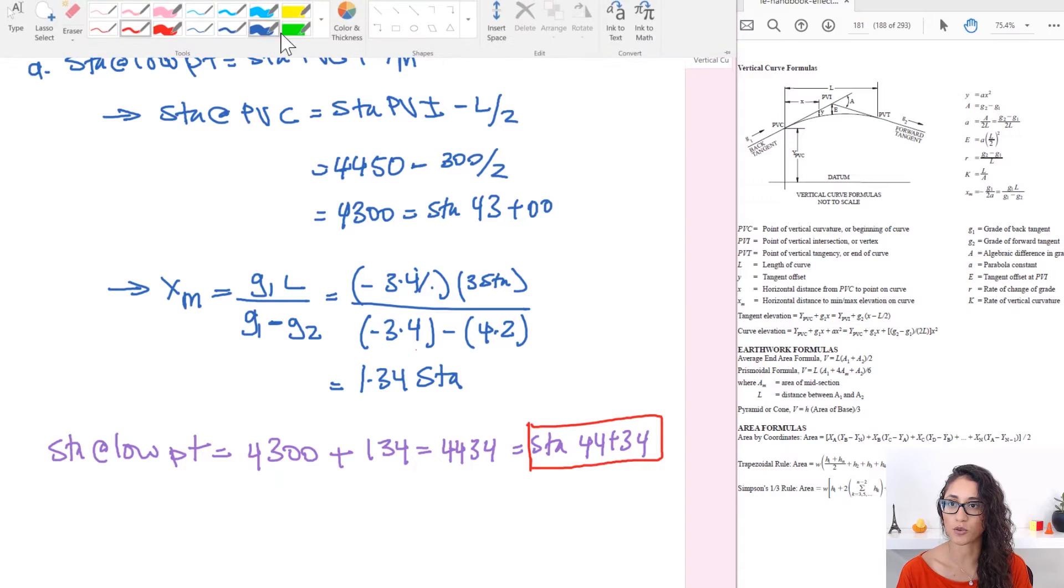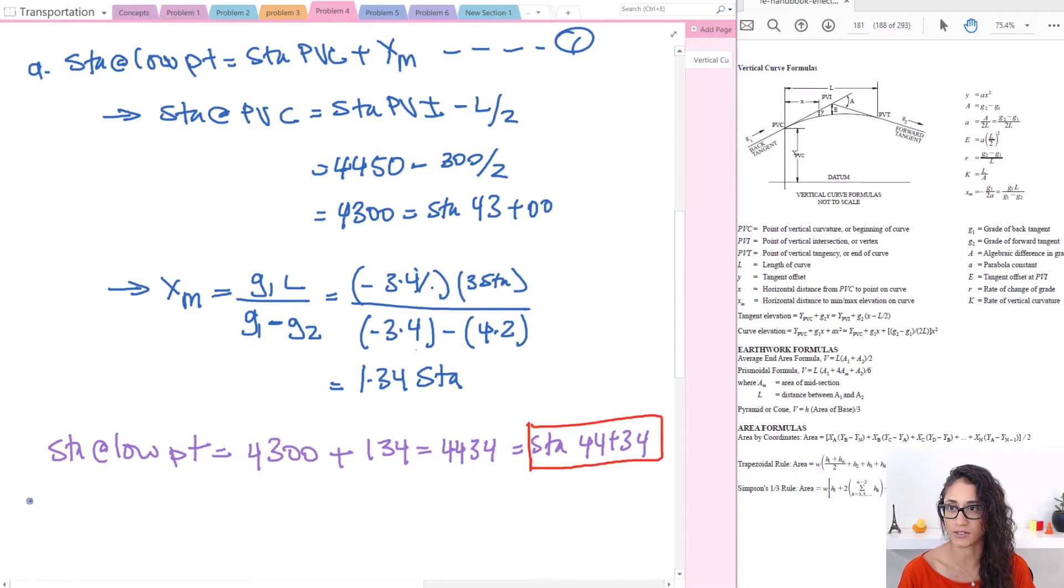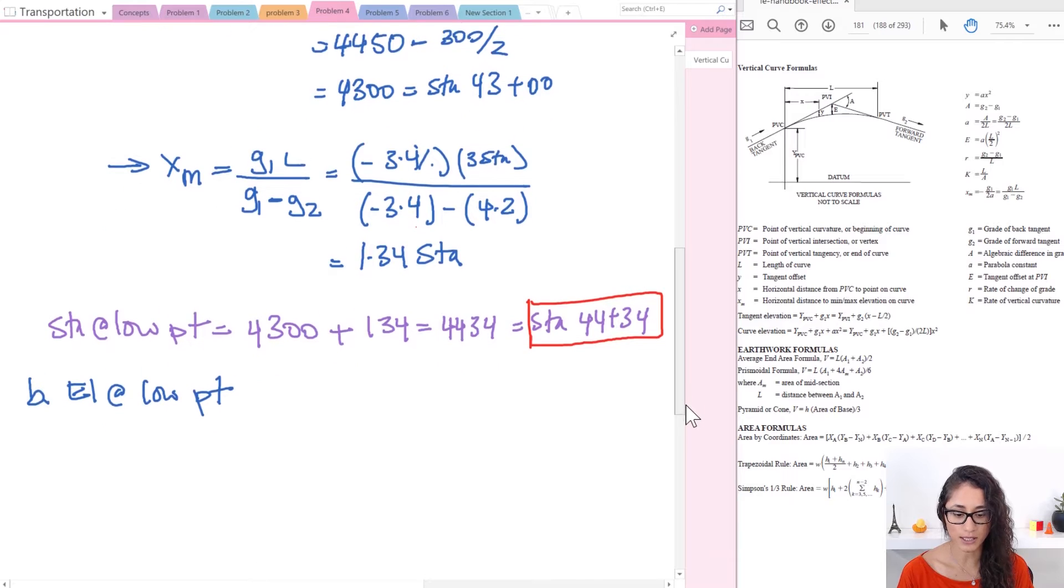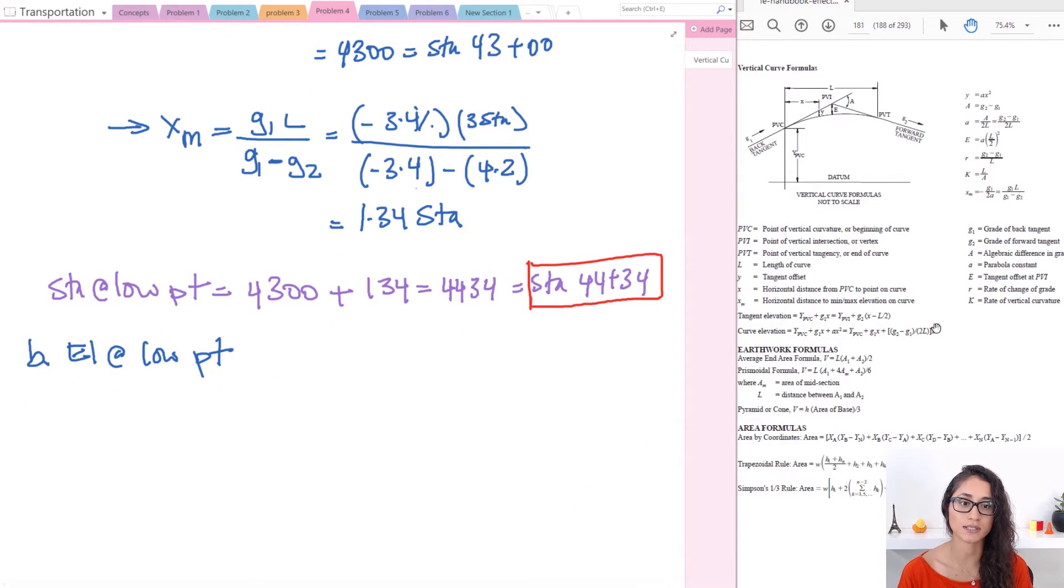Okay, now let's solve for the elevation at the lowest point. To calculate this we're going to use the same equation as we used in the previous problem which is the curve elevation equation. Whenever you want to find the elevation at lowest point or at a given station, we use this formula.